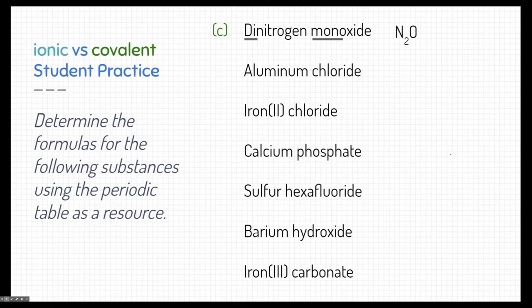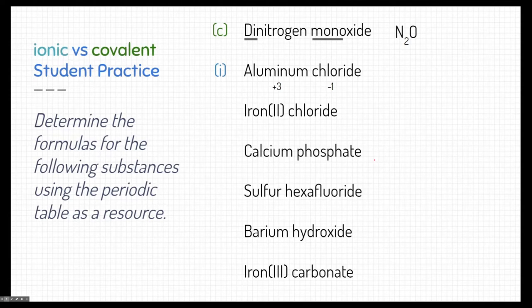How about aluminum chloride? Aluminum is a metal and chlorine is a non-metal, so this is an ionic compound. For ionic compounds, charges are important — we have to cancel out the charges and make the compound neutral. Looking at the periodic table, aluminum has a positive 3 charge and chlorine has a minus 1 charge. We need three total chlorines to cancel out the one aluminum, so the formula is AlCl3.